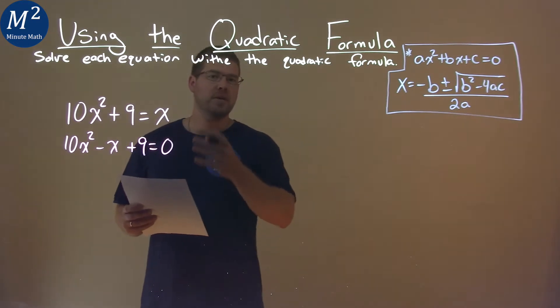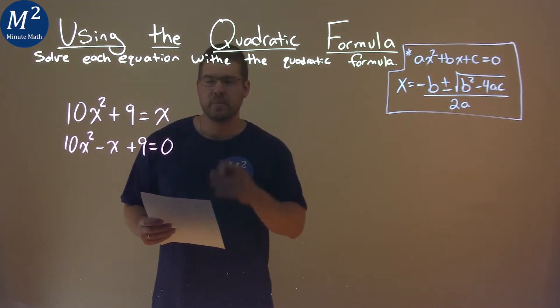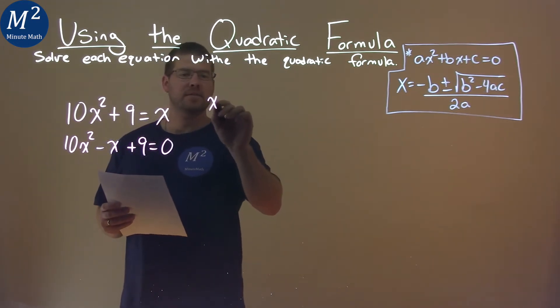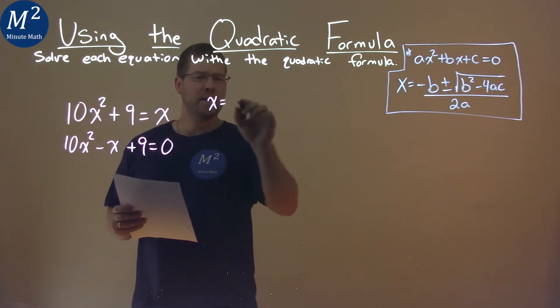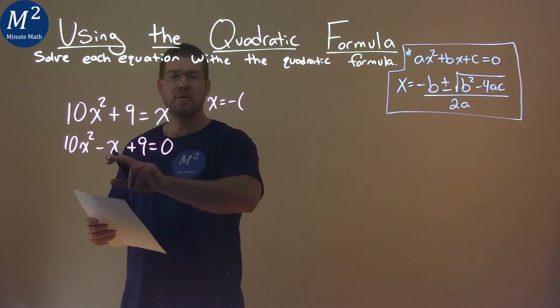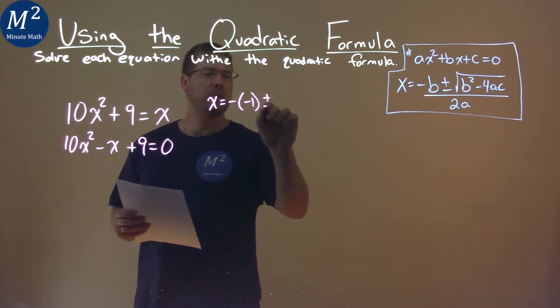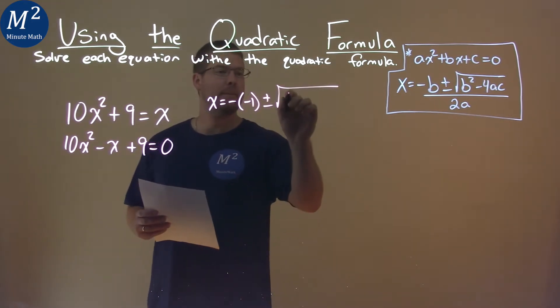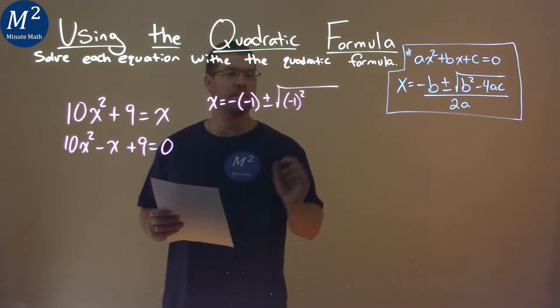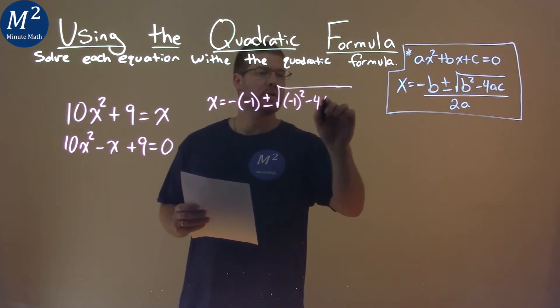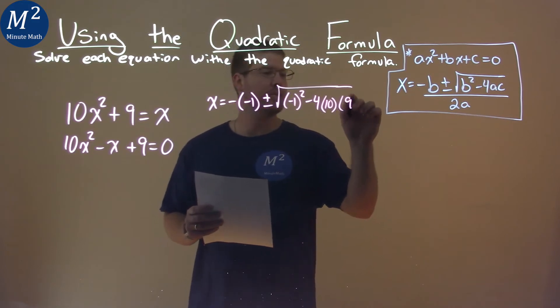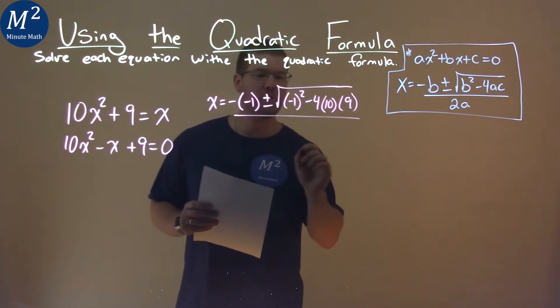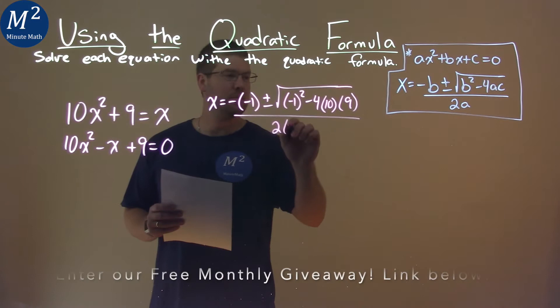Now from here I can use the quadratic formula. I use that here as x equals, and then I want to have all my negative b values, so negative, and my b value is negative 1, plus or minus the square root of b squared, so negative 1 squared, minus 4a, which is 10, and c, which is 9, all over 2 times a, which again is 10.